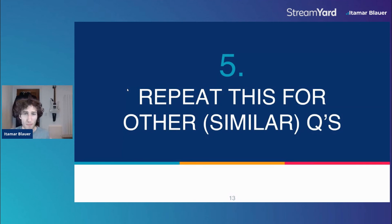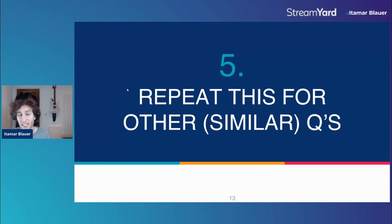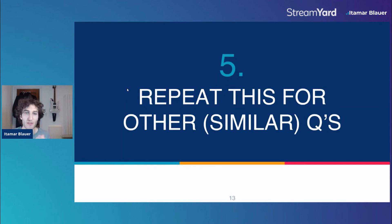Step number five is simply to repeat this for similar questions, and do this on all of your blog posts. Any piece of content that you have, take this five-step approach and you'll be able to see that over time you'll be very likely to generate some featured snippets, because you're understanding how Google picks out this information and what it finds important to display. You can replicate this process for your blog posts, and hopefully you will see a lot of success in generating featured snippets, as well as writing them in a way that will get you more clicks.